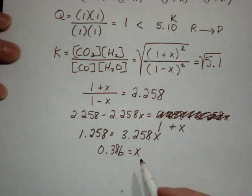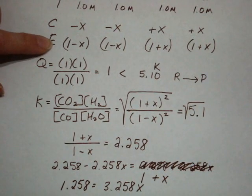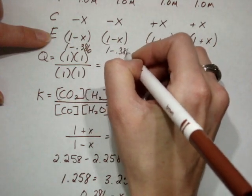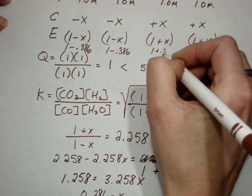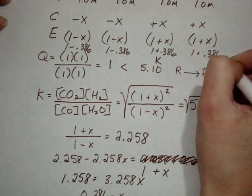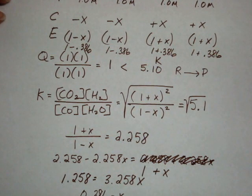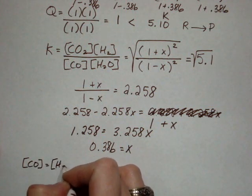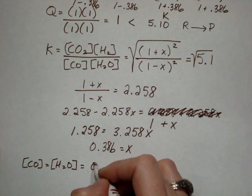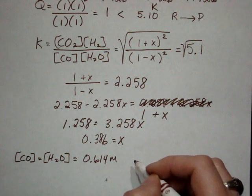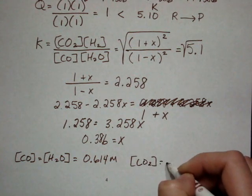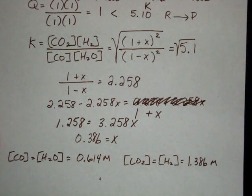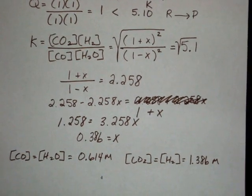Now I take that X and go back to my equilibrium concentrations to determine them. 1 minus 0.386, 1 minus 0.386, 1 plus 0.386, and 1 plus 0.386. My concentrations end up being for both CO and H2O, 1 minus 0.386, which is 0.614 molar. For the products CO2 and H2, 1 plus 0.386, which is 1.386 molar. It's a big problem and they can get very tricky.